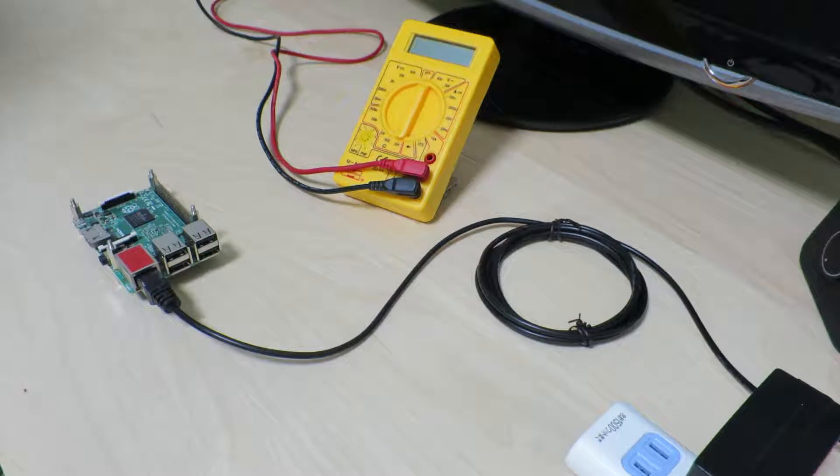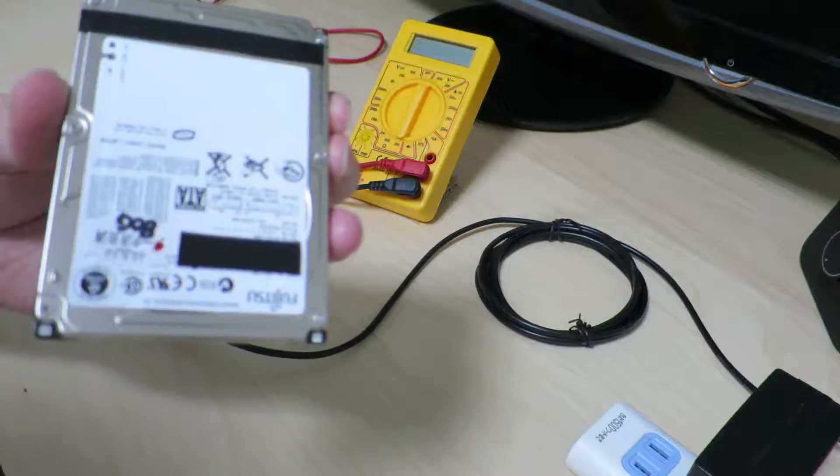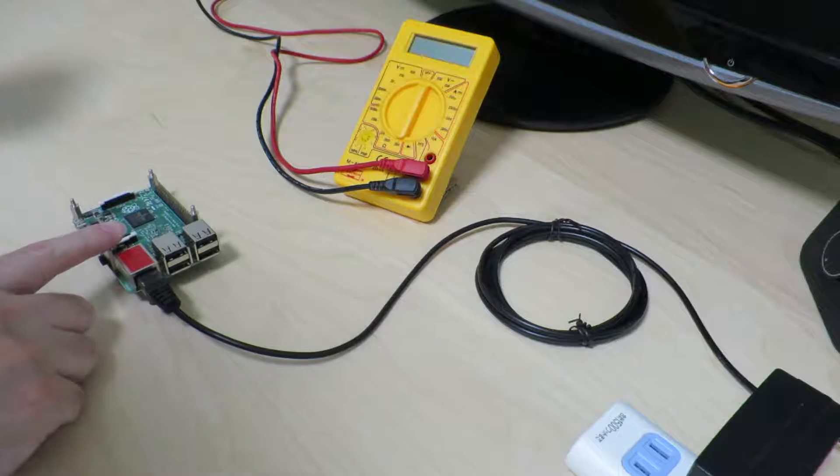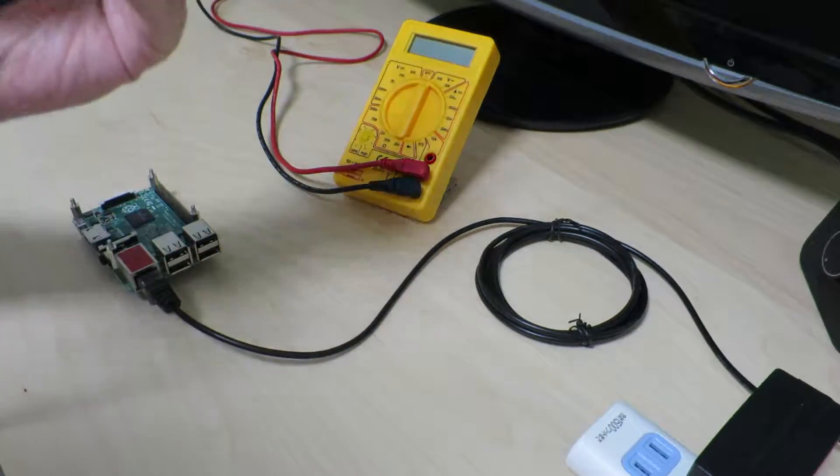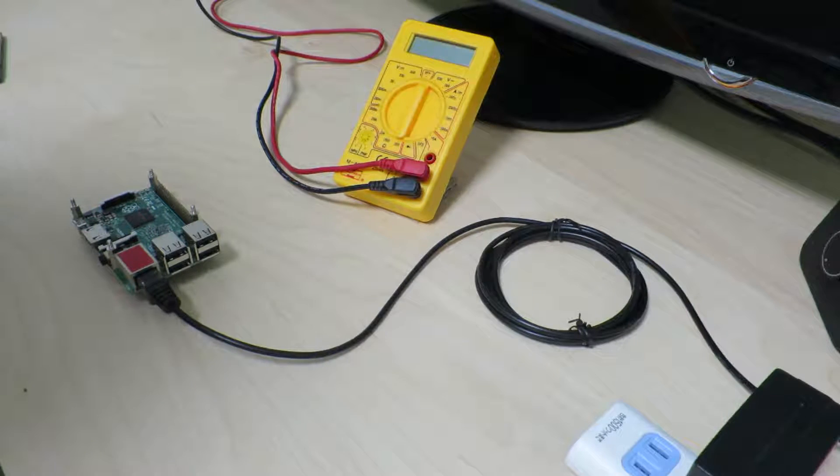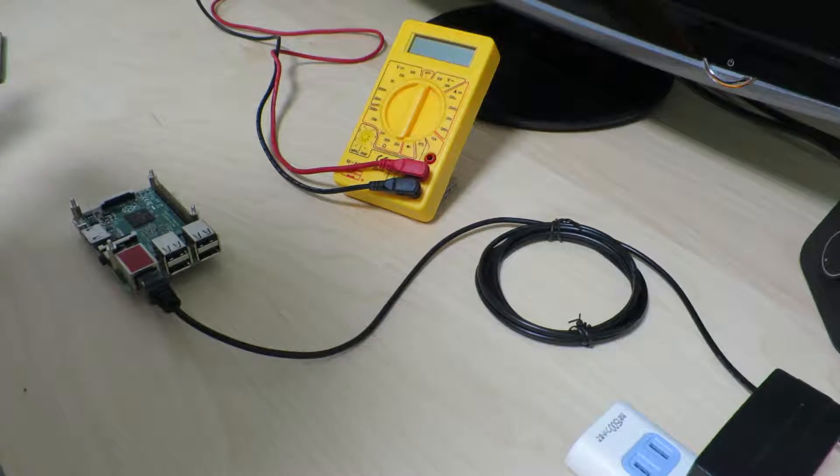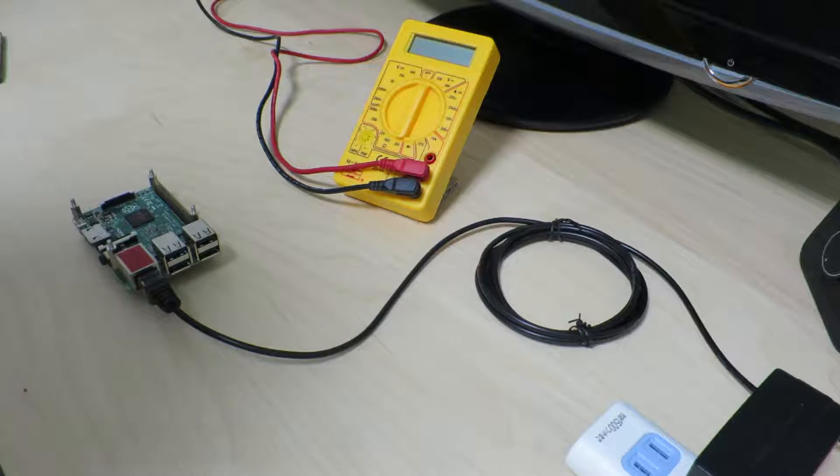So in a previous video I was trying to connect an external two and a half inch hard drive to the Raspberry Pi 2 through an unpowered USB to SATA conversion board. And I was actually encountering quite a few difficulties at the time. And what this video will go through is some power issues that you may encounter when using this Raspberry Pi 2.